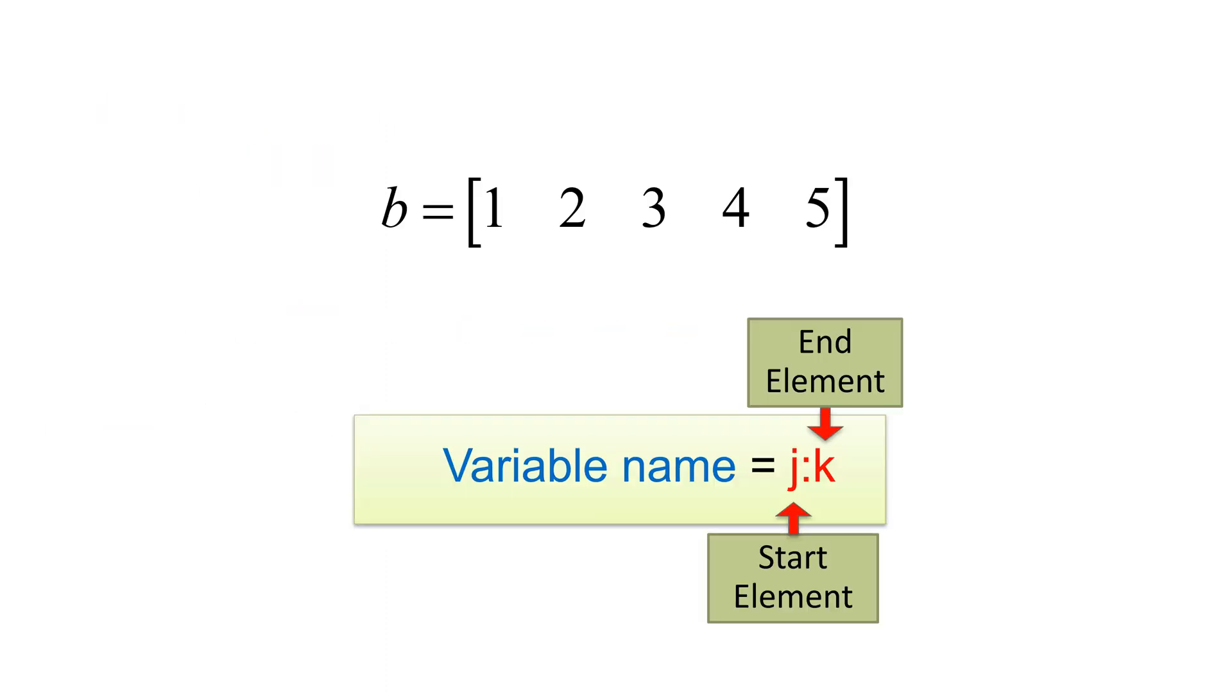What about creating a 1 by 5 row vector B having 1 to 5 with increment of 1? You can still use square brackets. Alternatively, in case that the element increase by 1, you can use colon operator. You can type B equals sign starting number 1, colon followed by end number 5 to create the row vector B. You can use colon operator for indexing. For example, if you want to access second to fourth element, you can type B parenthesis 2 colon 4.